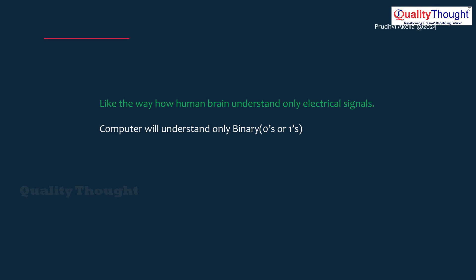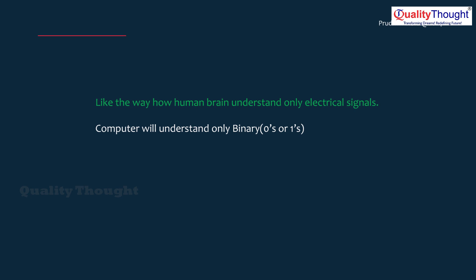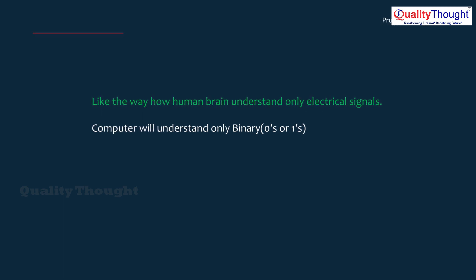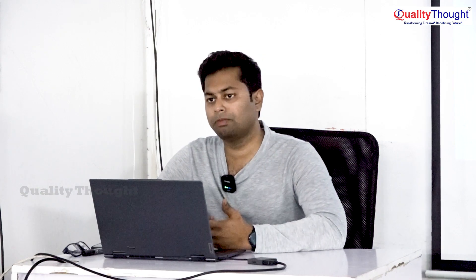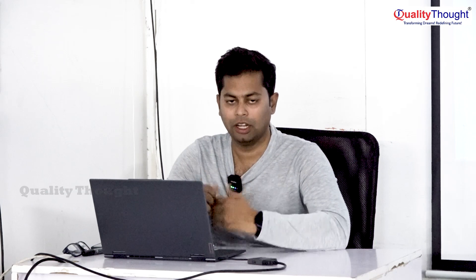Just like the human brain understands only electrical signals, the CPU of the computer — which is the brain of the computer — understands only ones and zeros, which is called binary. The brain understands electrical signals; computers understand binary. So just as the eye captures an object and converts it into an electrical signal to pass to the brain, the input device captures the action performed by the human, converts it into binary, and passes it to the CPU for processing.